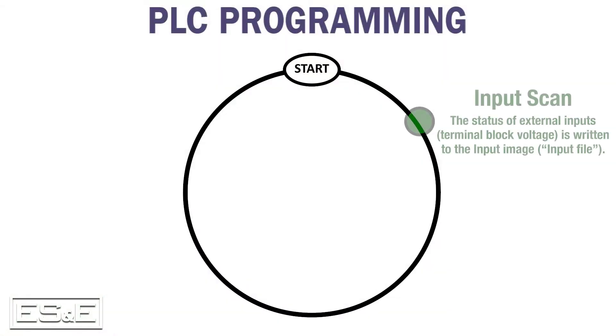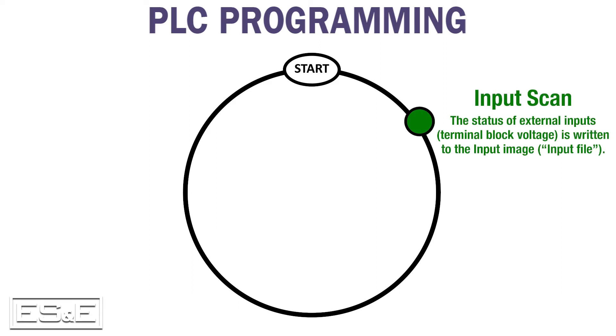The input scan at the top of the cycle reads and stores the value of input devices. For example, if a start or stop button is being pushed, that value will be stored as a 1 or a 0.